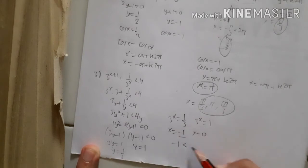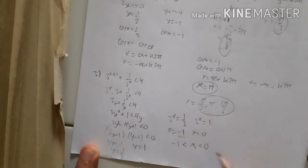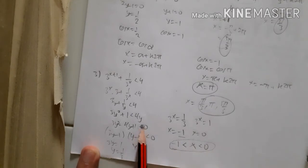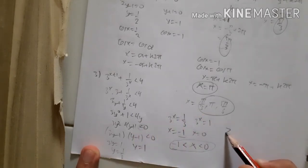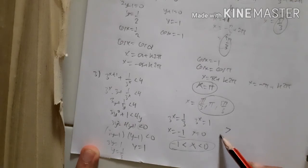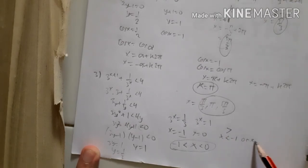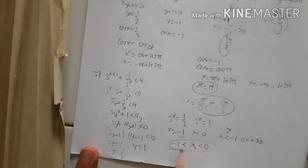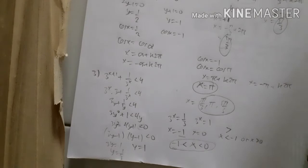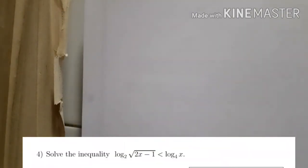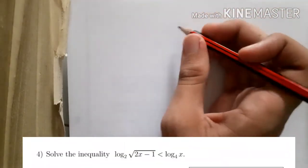Because the inequality is less than (strict), the solution lies between the roots: −1 < x < 0. If the inequality were greater than, the solution would be x < −1 or x > 0. So the answer for problem 3 is −1 < x < 0.